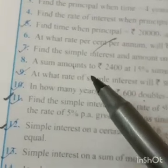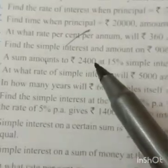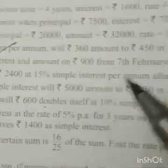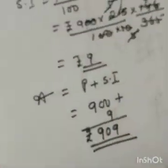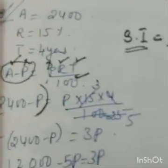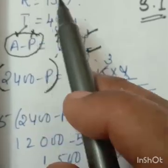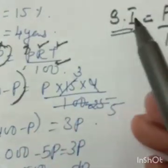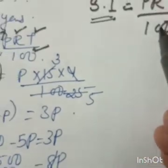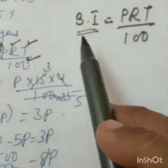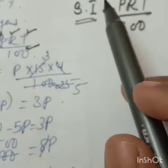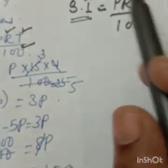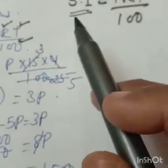Question number 8: a sum amounts to rupees 2400, rate 15%, time 4 years — find the sum. Amount = 2400, rate = 15%, time = 4 years. Formula: Simple Interest = PRT/100. As I explained in my last video, if more than one variable is unknown in the formula, you cannot get the answer directly — you must convert the formula.